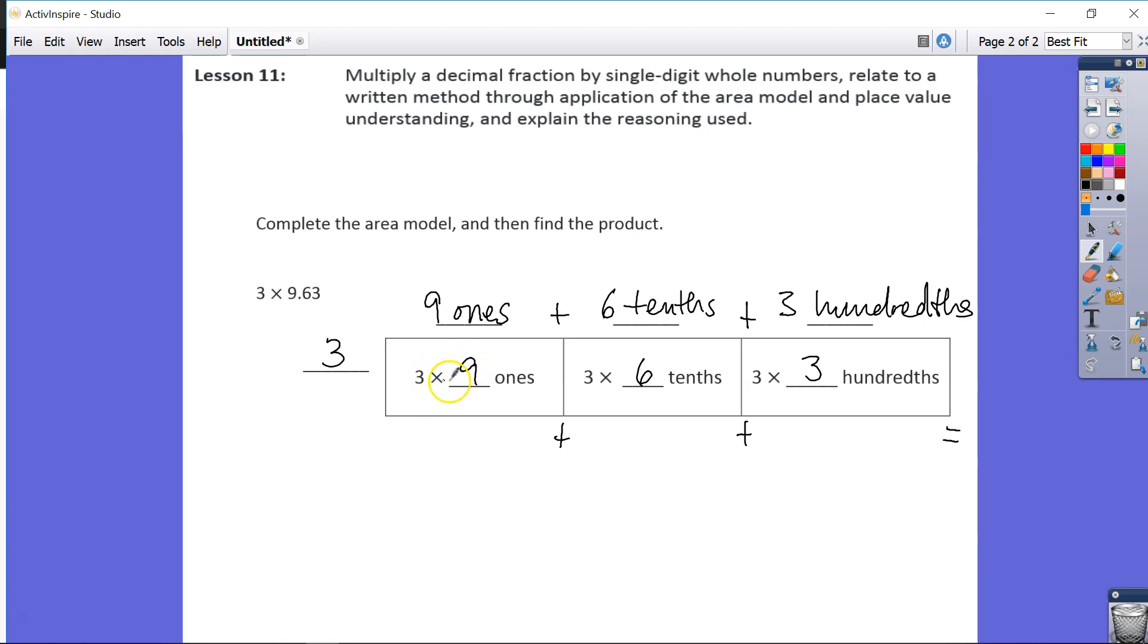What I like to do is write it in unit form, and then I'm going to write it in standard form underneath the line. We know that 3 times 9 is 27, 3 times 6 is 18, so it's going to be 18 tenths. That's 3 times 6 tenths is 18 tenths. This is important because we're going to have to convert this back to standard form, and then we have 3 times 3 hundredths is 9 hundredths.